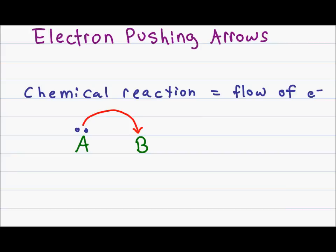After showing the electron pushing arrow, I show a yield sign and verify the result of these electrons moving. Since the blue electrons on atom A attacked atom B, I now have a bond formed between A and B made up of these electrons. Since the electrons are in bond form, atom A no longer has a lone pair of electrons.